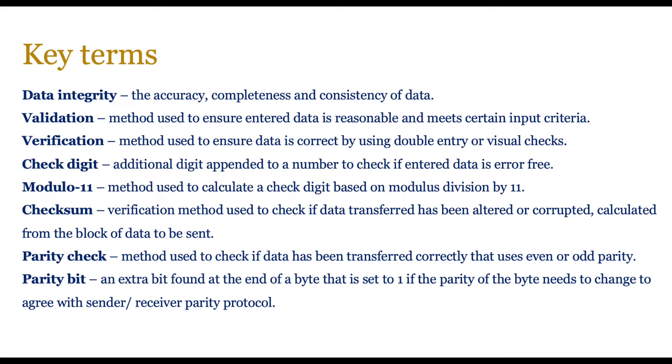We can use modulo-11, a method that is used to calculate a check digit based on modulus division by 11. Similarly, you can have checksum, which is a verification method used to check if data transferred has been altered or corrupted, and this is calculated from the block of data that is to be sent. So you use this block of data, you create the checksum, and then you send it out. The receiver does the same calculation, and if the checksum matches, then the data is verified to be correct.